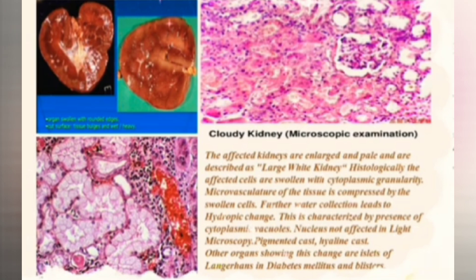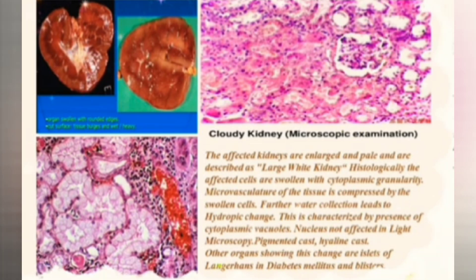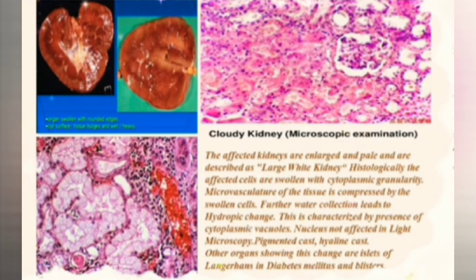Histologically, the affected cells are swollen with cytoplasmic granularity. The microvasculature of the tissue is compressed by swollen cells. Water collection leads to hydropic change, characterized by the presence of cytoplasmic vacuoles, but the nucleus is not affected. As seen in light microscopy, pigment casts and hyaline casts may also be seen.